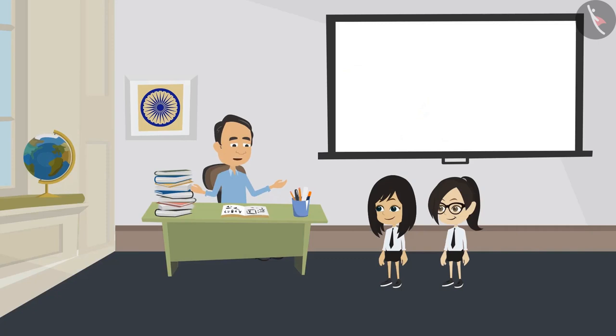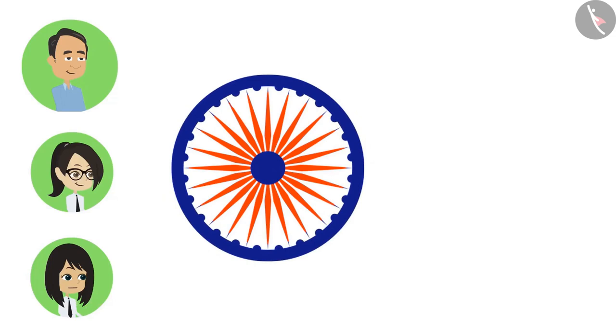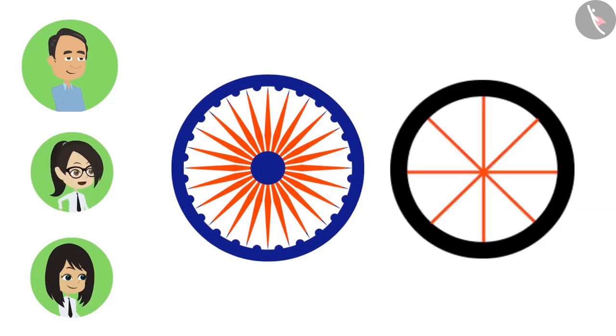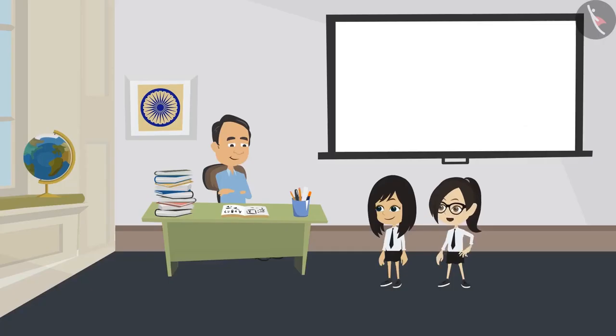Like this, there can be several radius in one circle. Like in the Ashok Chakra. And also in the wheel of our bicycle. Now I understand, sir.